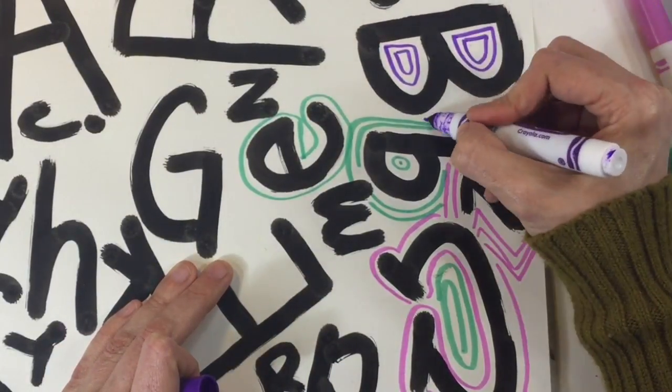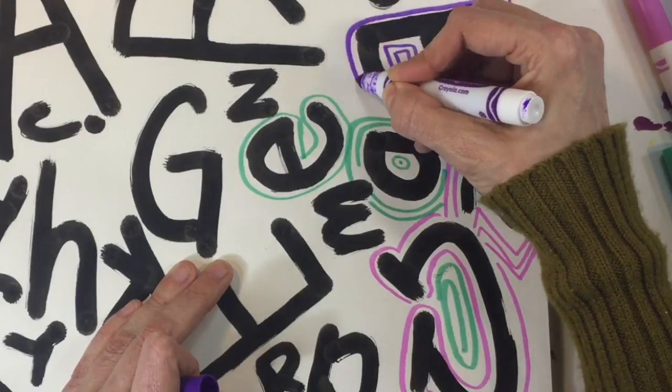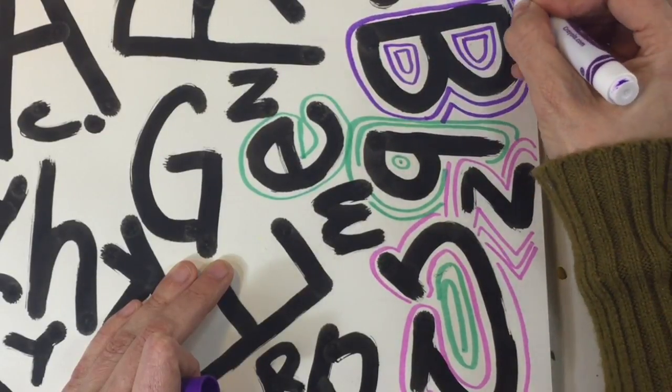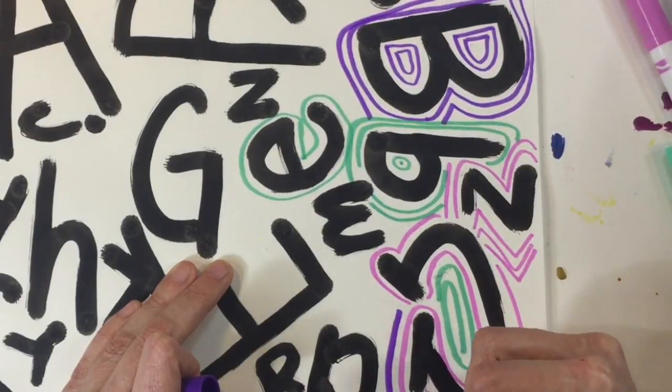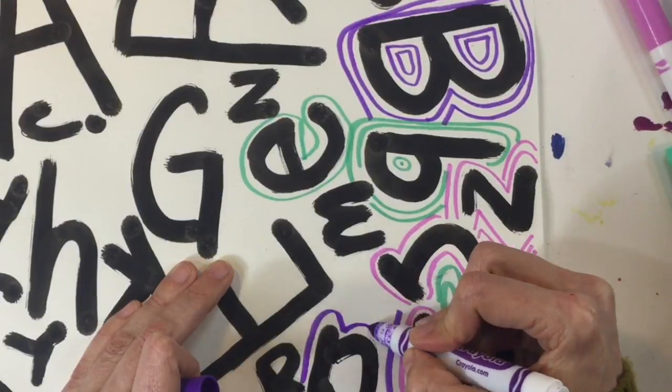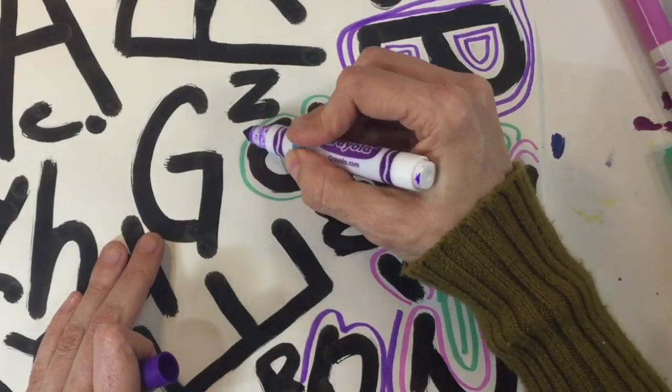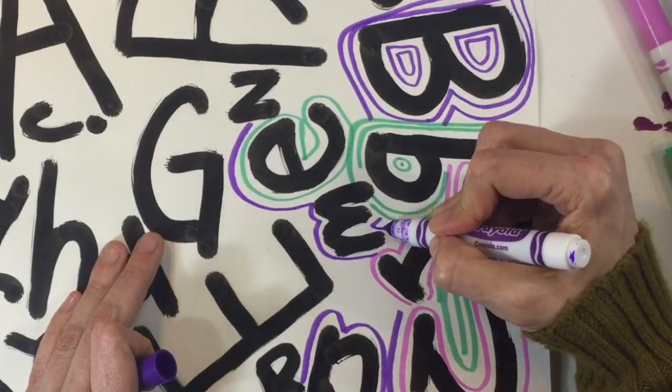It's good to use a variety of colors. That means to use a bunch of different colors. Any place that I see large places of white, I will add lines to fill it in to add more color.